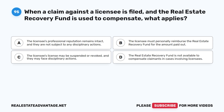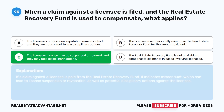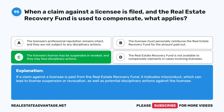Question 95: When a claim against a licensee is filed and the real estate recovery fund is used to compensate, what applies? A. The licensee's professional reputation remains intact and they are not subject to any disciplinary actions. B. The licensee must personally reimburse the real estate recovery fund. C. The licensee's license may be suspended or revoked and they may face disciplinary actions. D. The real estate recovery fund is not available to compensate claimants in cases involving licensees. The correct answer is C. If a claim against a licensee is paid from the real estate recovery fund, it indicates misconduct, which can lead to license suspension or revocation as well as potential disciplinary actions.